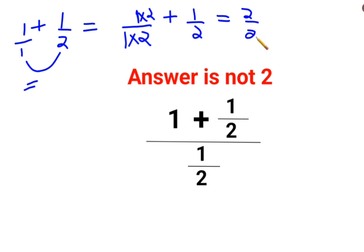So I am left with 2 upon 2 plus 1 upon 2. Now since the denominators are the same, I can directly add the numerators. So the answer for this one becomes 3 by 2.